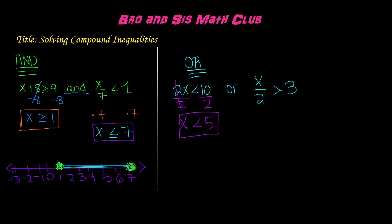Here we have x over 2 is greater than 3. We will multiply by 2 on both sides, because the inverse of division is multiplication. The 2s will cancel each other out, and we will be left with x is greater than 6. This is the solution to this inequality.